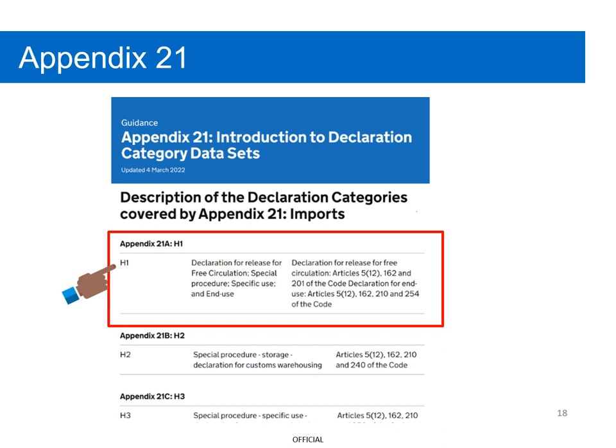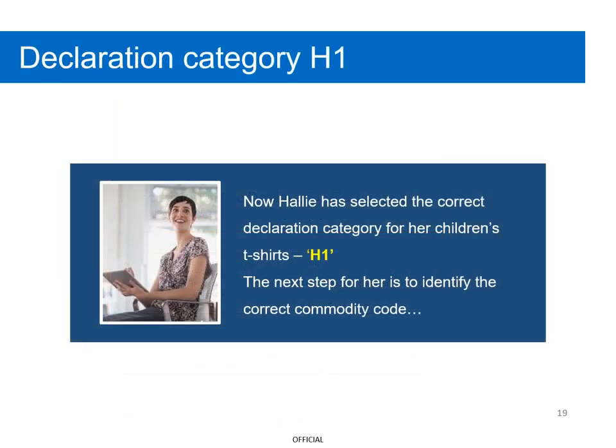As her goods are going into free circulation in the UK following import from the USA, she will need to use declaration category H1. Now Hallie has selected the correct declaration category, H1, for the children's t-shirts.